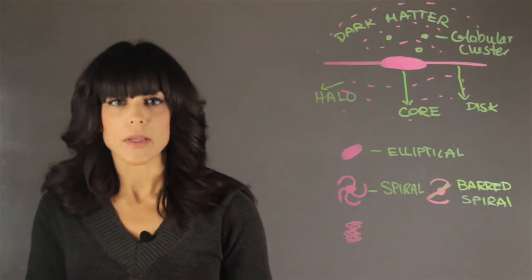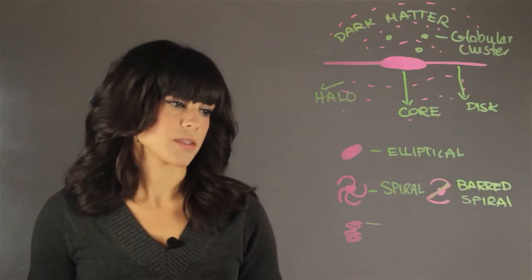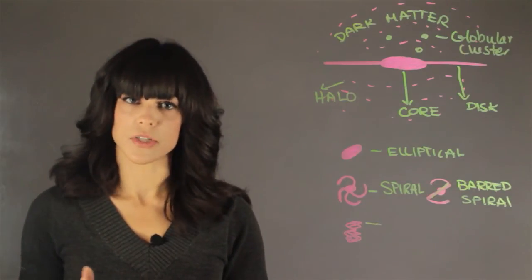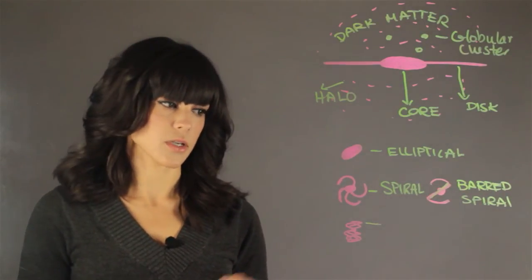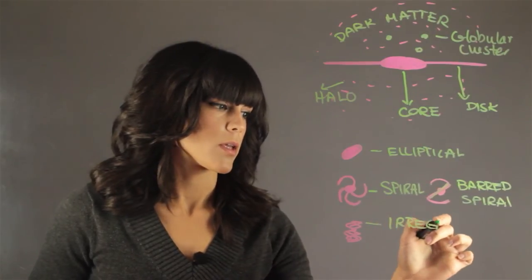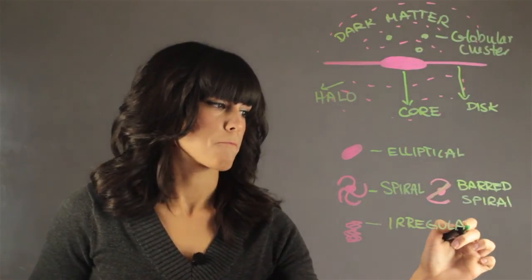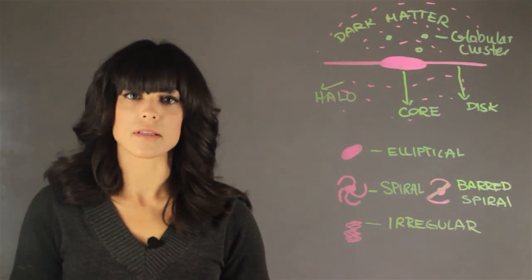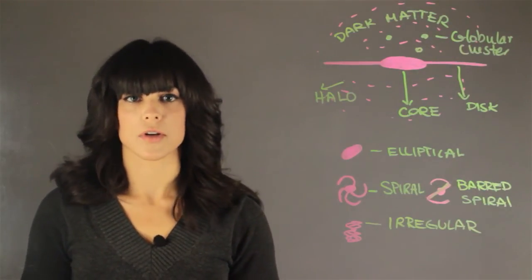And then we have the irregular stars. I drew it as a squiggle as they come in all shapes. They're sort of a mess without a structure. These are really young galaxies, and they have the highest rate of star formation.